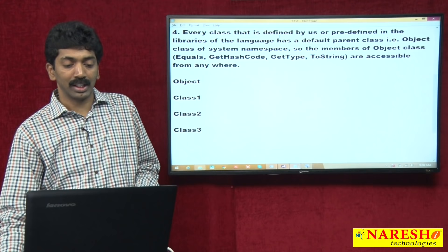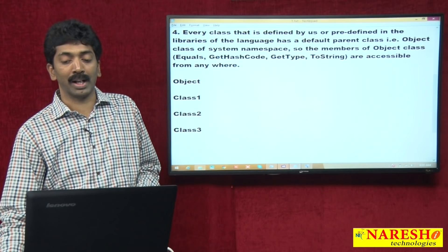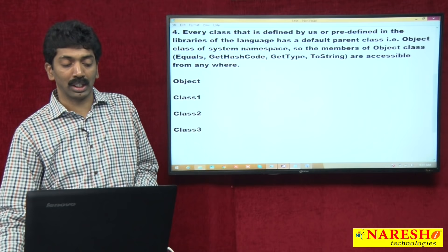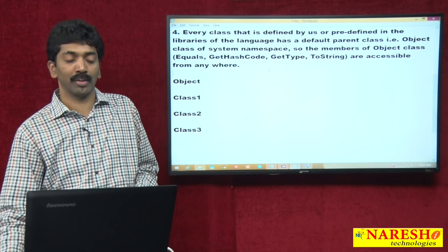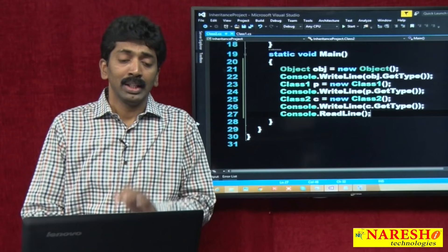So this is the fourth important point: every class defined by us or predefined in the language libraries has a default parent class — the Object class of the System namespace. Its members Equals, GetHashCode, GetType, and ToString are accessible from anywhere.